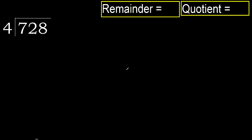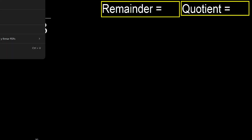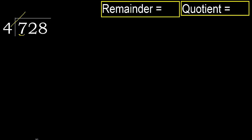728 divided by 4. Starting with 7: 7 is not less, so we work with 7. 4 multiplied by which number is nearest to 7 but not greater?